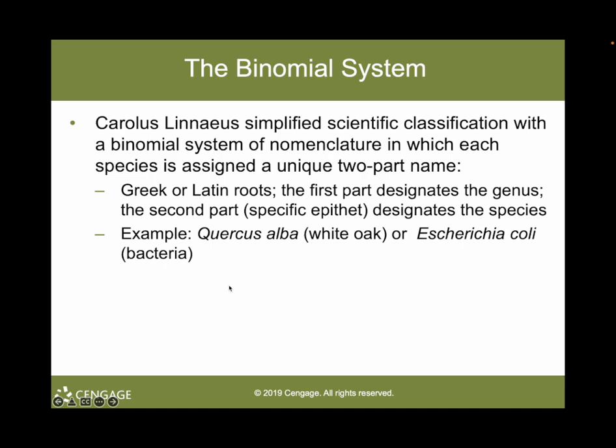Scientific names are generally derived from Greek or Latin roots or Latinized versions of names of persons, places, or characteristics. For example, Escherichia coli is based on the name of scientist Theodore Escherich, who first described it, and the specific epithet coli reminds us that E. coli lives in the colon, the large intestine. Scientific names permit biology to be truly international — even though common names vary in different locations and languages, an organism can be universally identified by its scientific name.